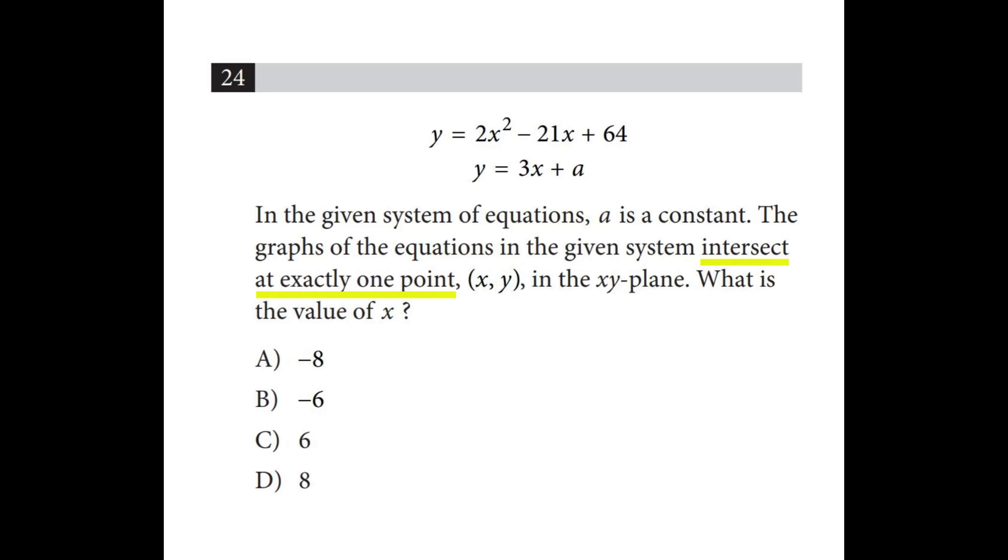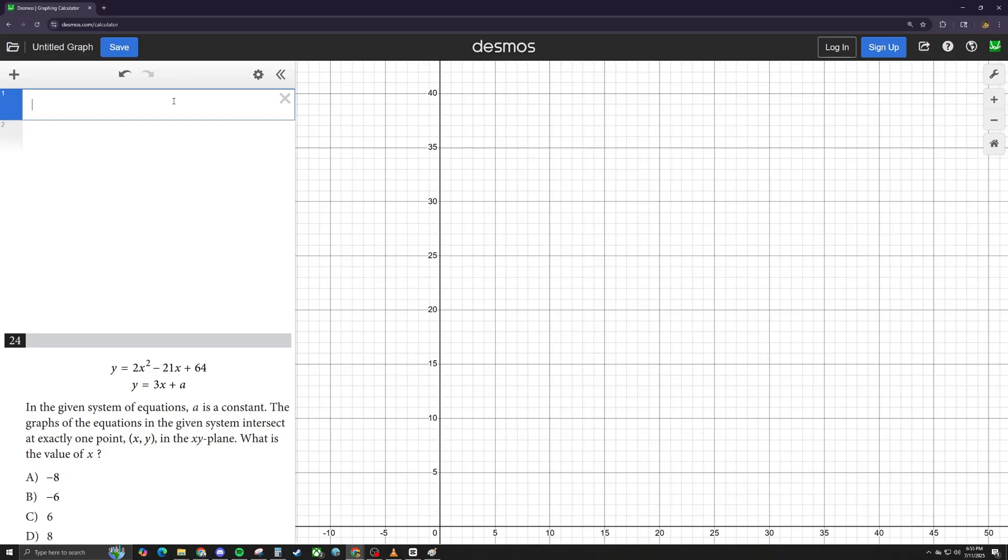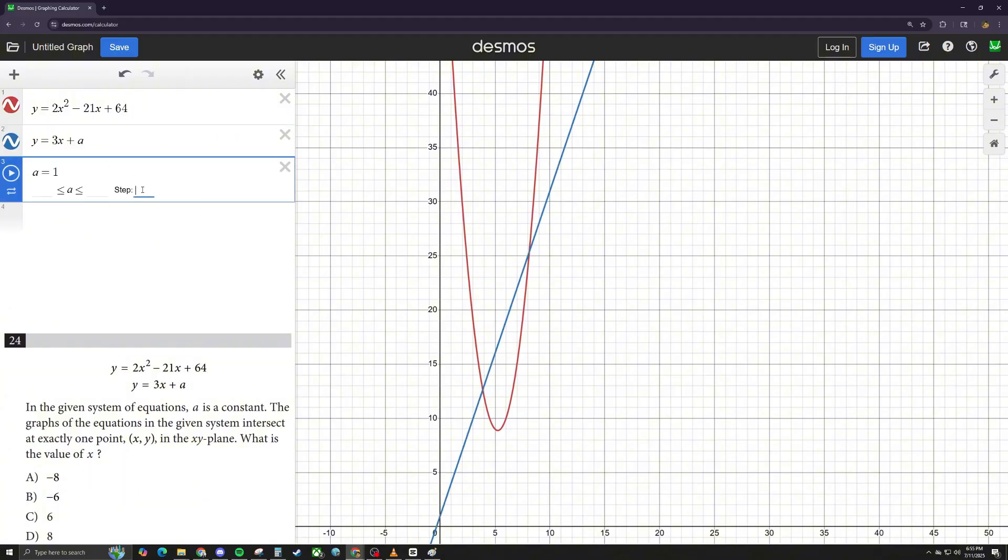This question is a perfect example of why you should be using Desmos on the SAT. Look at this explanation that College Board gives you to solve this equation. To solve this using Desmos, you just plug in the two equations they give you and make a slider for that constant a. Since it tells you this only has one point of intersection, you just keep adjusting a until you get one point of intersection. And again, you just click on the point and you have your answer.